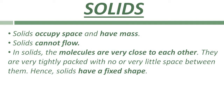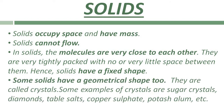If you take a block of wood and keep it in different containers, it retains its shape — it does not change its shape when kept in different containers. So, solids have a fixed shape. Some solids have a geometrical shape, like hexagonal or tetrahedral. Such solids are called crystals. Examples of crystals are sugar crystal, diamond, salt, copper sulfate, and potash alum.